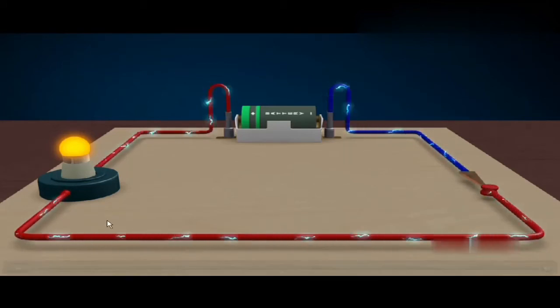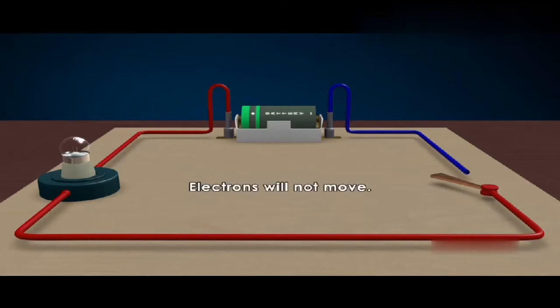Unless the circuit is complete, that is, from the voltage source, make a full circle back to the source, electrons will not move.